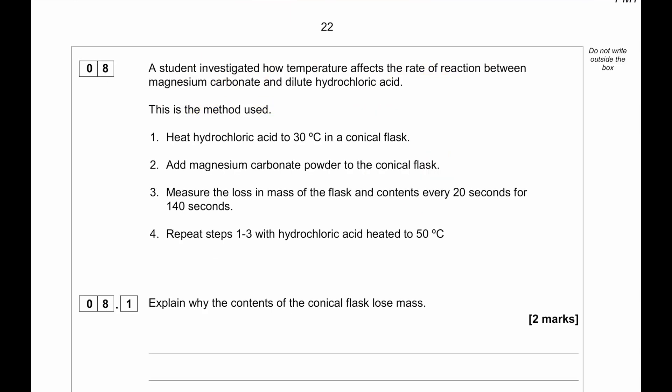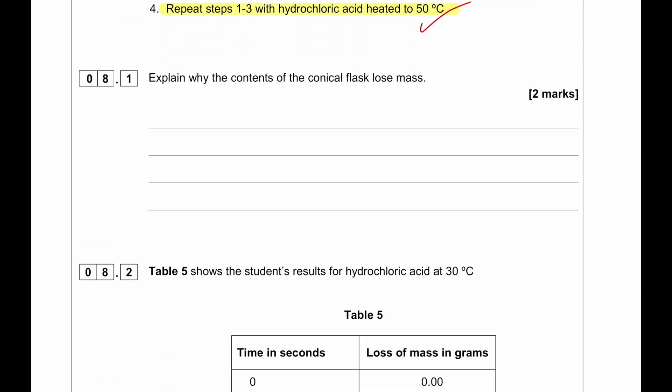A student investigated how temperature affects the rate of reaction between magnesium carbonate and dilute hydrochloric acid. The method used: heat hydrochloric acid to 30 degrees Celsius in a conical flask, add magnesium carbonate powder to the conical flask. Measure the loss in mass and contents every 20 seconds for 140 seconds. Since we are reacting magnesium carbonate with acid, the carbonate produces CO2, which will be lost as a gas. That's why the mass will decrease. Repeat steps 1 to 3 with hydrochloric acid heated to 50 degrees Celsius. As we have higher temperature, the faster the rate of reaction going to be. Explain why the contents of the conical flask lose mass. Our answer for that will be because a gas is produced or we can say carbon dioxide is produced. A gas is produced and that can escape.